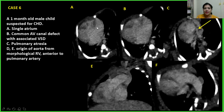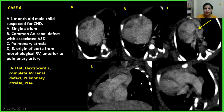Case 6: A one-month-old female with a common single atrium, common atrioventricular defect with associated VSD, pulmonary atresia, and origin of the aorta from the morphological right ventricle anterior to the pulmonary artery. This was a case of DTGA with dextrocardia and complete AV canal defect.